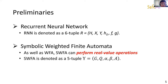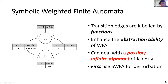We propose efficient adversarial sequence generation for RNN. It can be represented as a six-tuple. SWFA is an abstraction of WFA extracted from the original RNN to enhance the interpretability of RNN and prepare for subsequent adversarial sequence generation. SWFA enhances the abstraction ability of WFA and can deal with a possibly infinite alphabet efficiently. We take advantage of SWFA's symbolic feature to preserve its symbolic input. To the best of our knowledge, our approach is the first to abstract RNN into SWFA for perturbation.